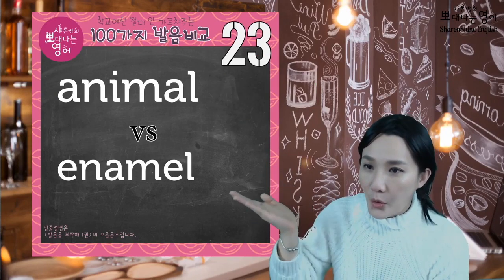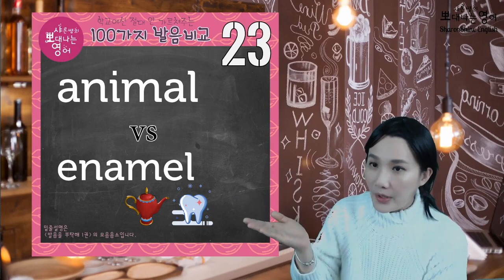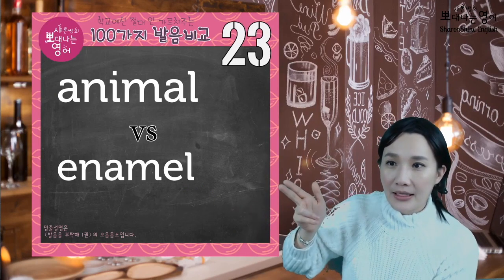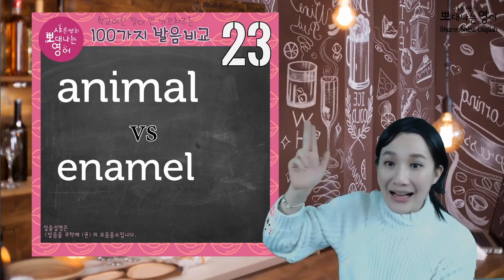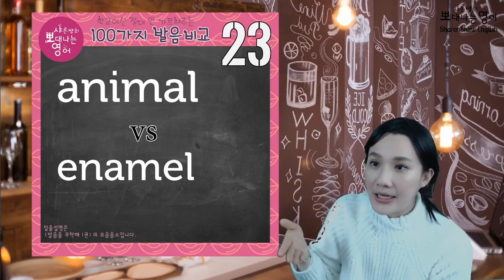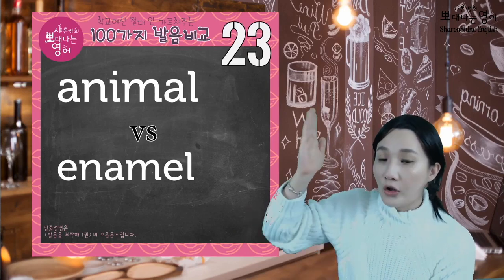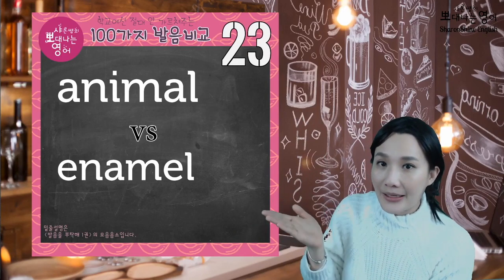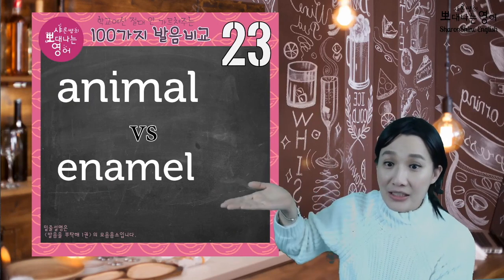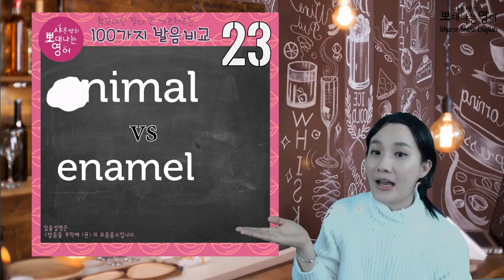그 다음에 이건 두 번째 음절에 강세가 있어요. (The next one has stress on the second syllable.) So enamel — enamel. These two words, animal and enamel, are really good for practicing the A vowel sound. Animal, animal.